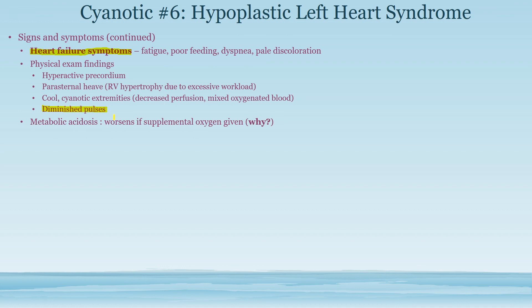An important point: giving supplemental oxygen worsens metabolic acidosis. If you give supplemental oxygen, pulmonary vascular resistance goes down. But the core problem in hypoplastic left heart syndrome is that not enough blood is reaching systemic circulation. So if you decrease pulmonary vascular resistance by giving oxygen, blood will preferentially flow to the lungs rather than systemic circulation — making the problem worse. Therefore, do not give supplemental oxygen in a patient with hypoplastic left heart syndrome.